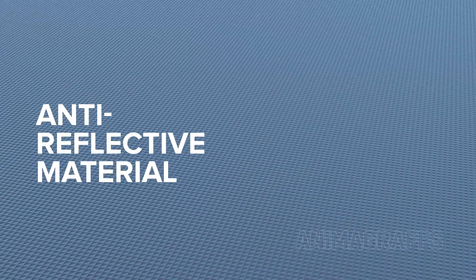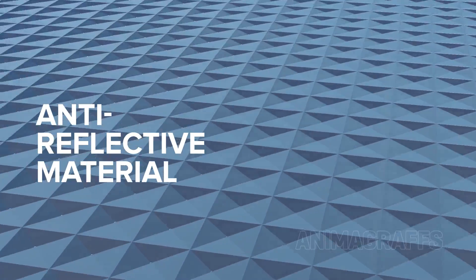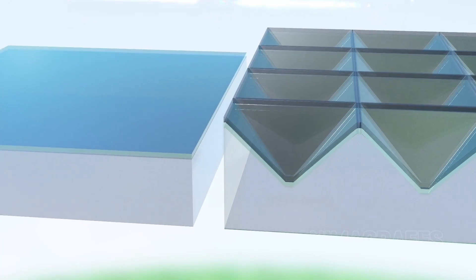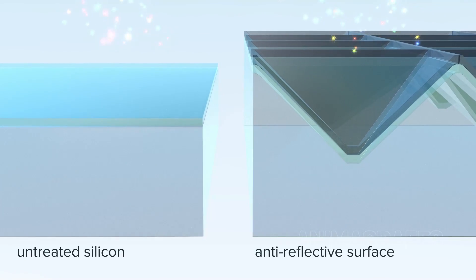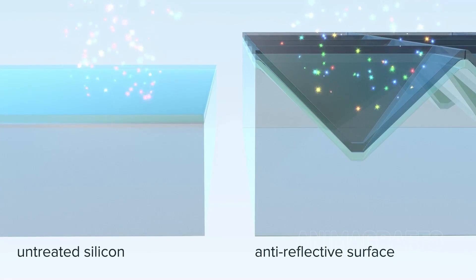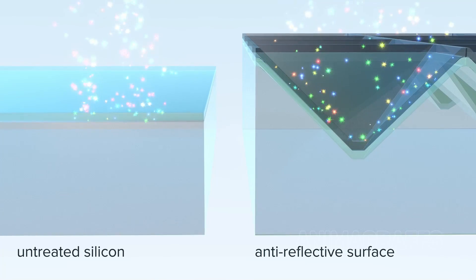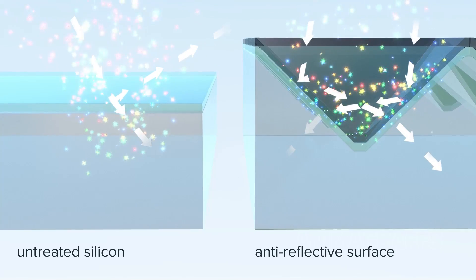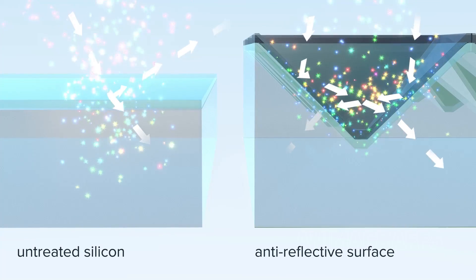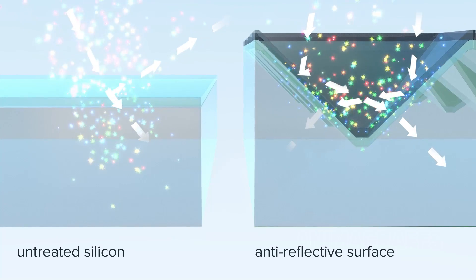Anti-reflective material. Polished silicon alone wastes a lot of light by reflection, so anti-reflective coating is added for improved efficiency. There are many types of anti-reflective material. In this example, a grid of microscopic inverted pyramids directs and captures light at many different angles, giving it maximum opportunity to enter the cell and remain longer inside.